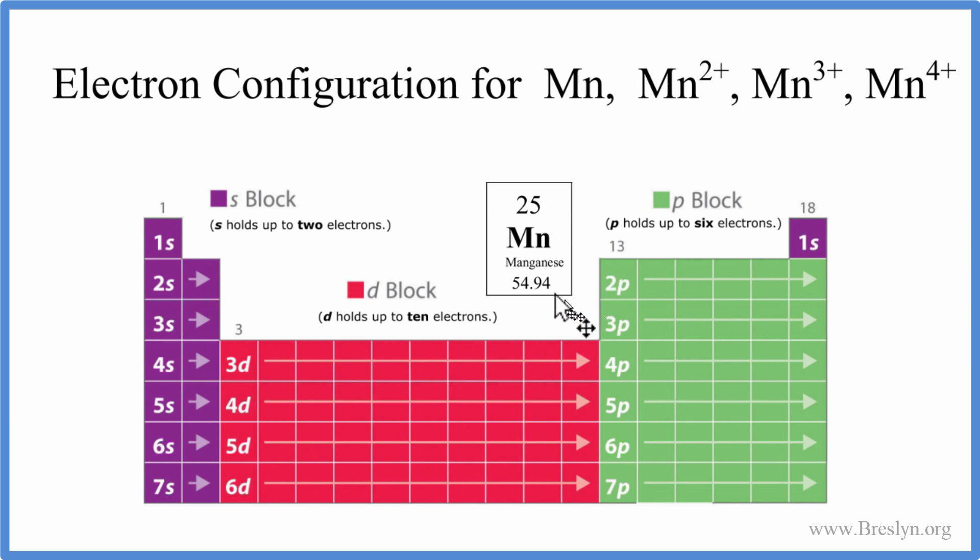With manganese, we have 25 protons. This is the atomic number, which equals the number of protons. Because manganese here is neutral and doesn't have these positive charges, the number of protons equals the number of electrons. So let's write the electron configuration for manganese with these 25 electrons here, and then we'll remove electrons to form ions.